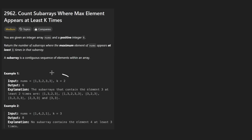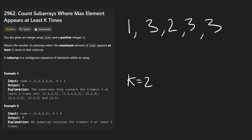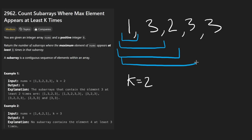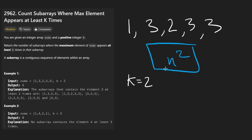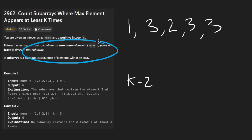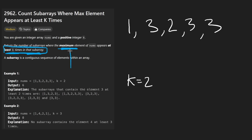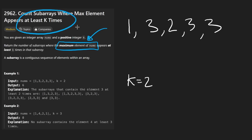We're given an integer array of nums. Let's take the first example where k is equal to 2. We want to return the number of subarrays from nums — every single subarray starting at the first element, the second element, etc. There are n squared subarrays total. We want to return all subarrays where — read this carefully — the maximum element appears at least k times in that subarray. And they don't mean the maximum in the subarray; they mean the maximum element of all of nums.